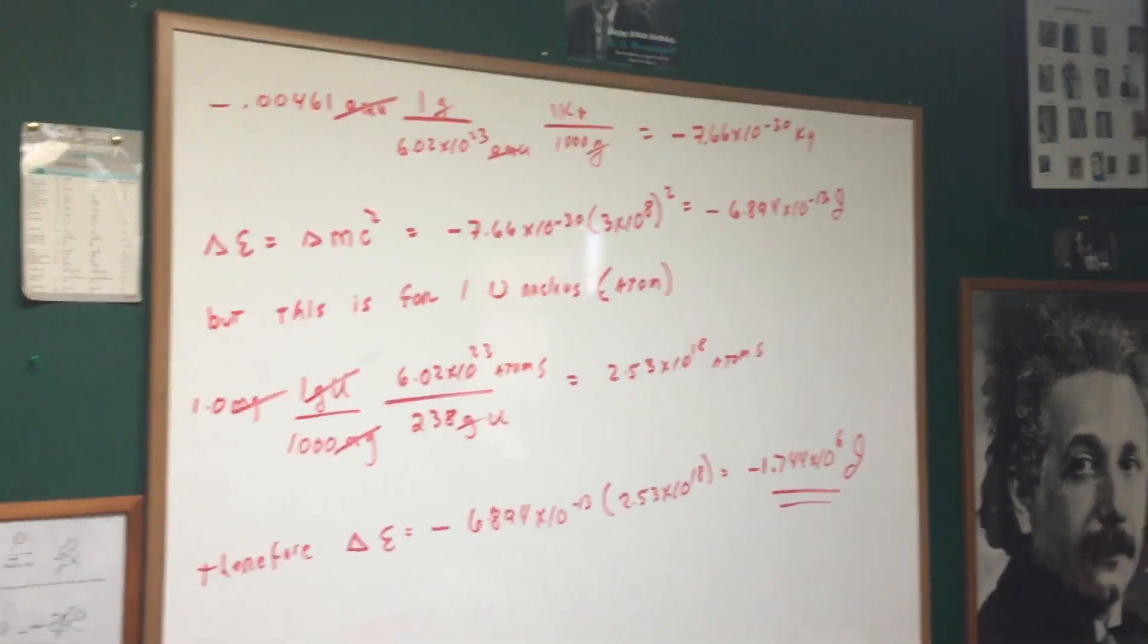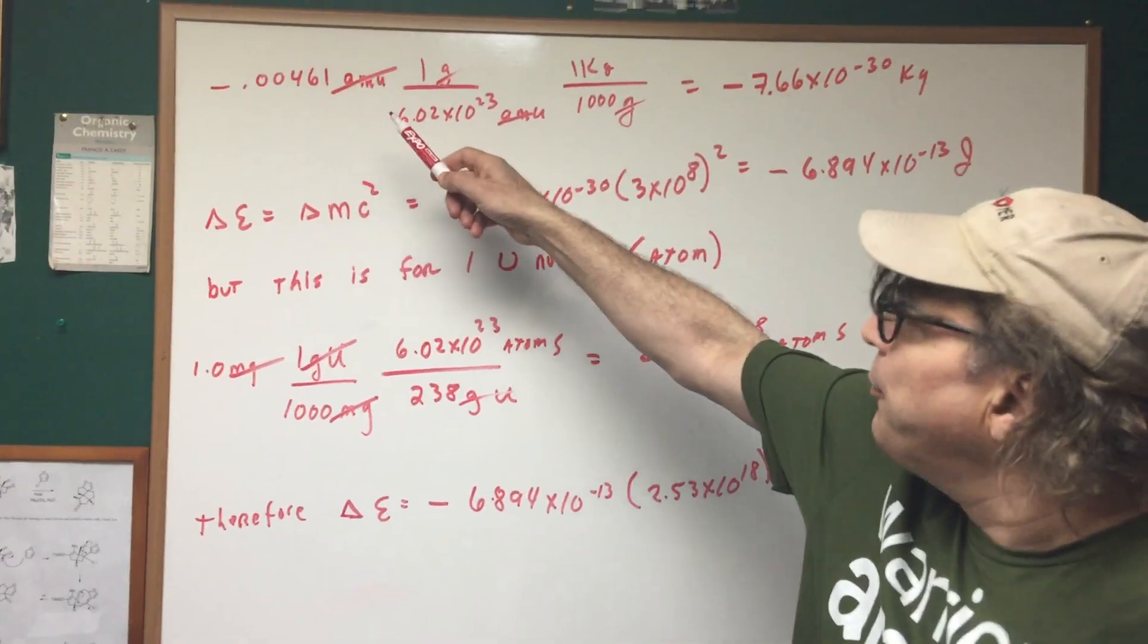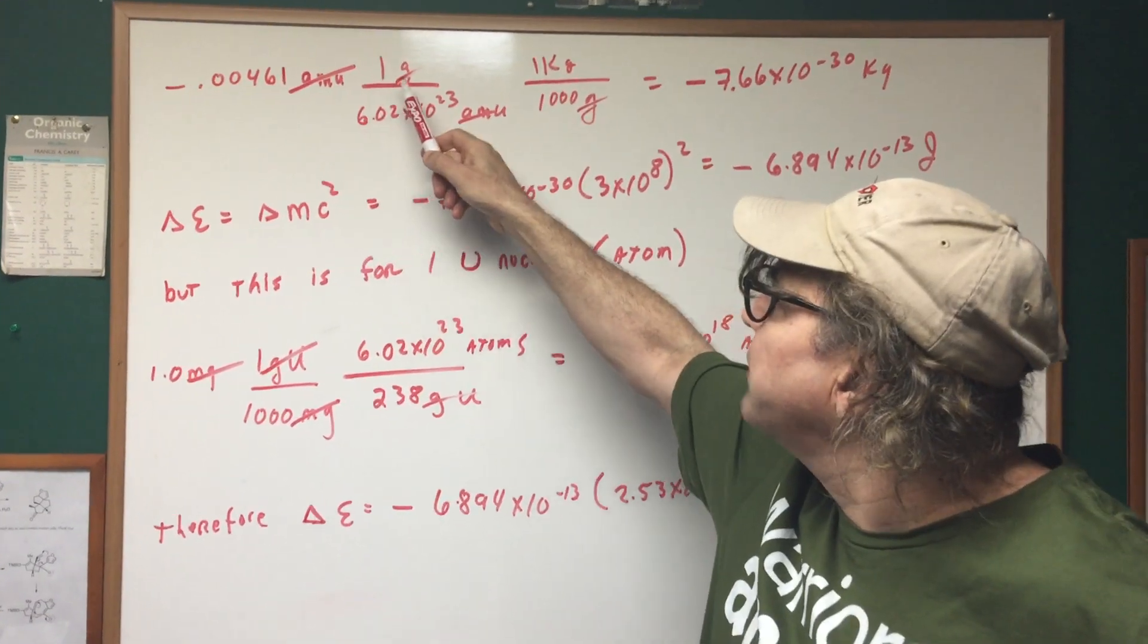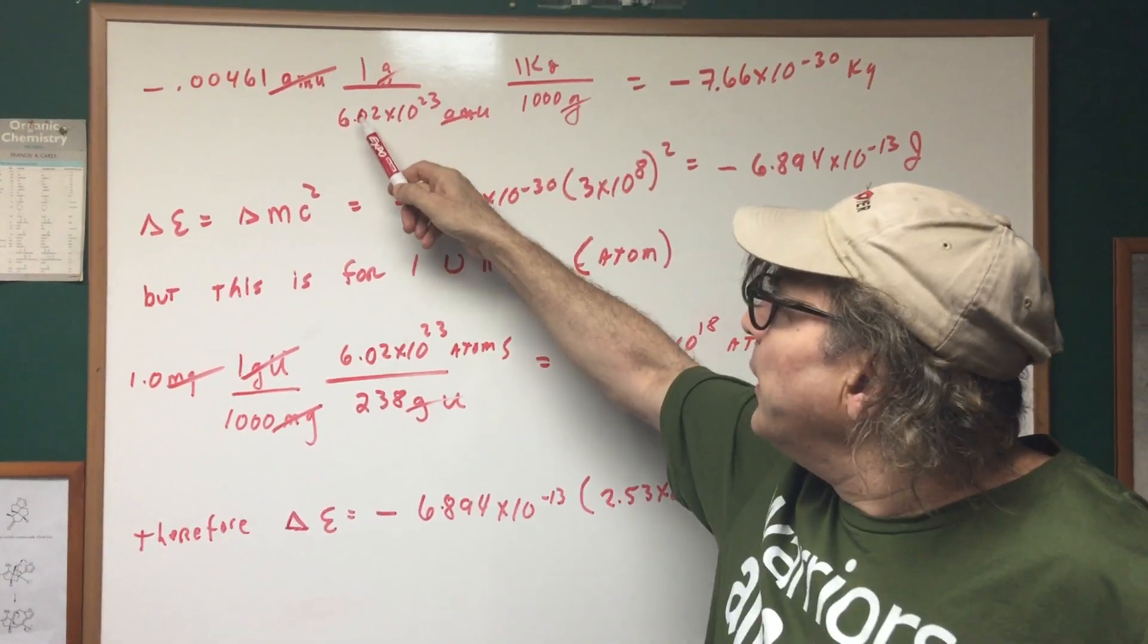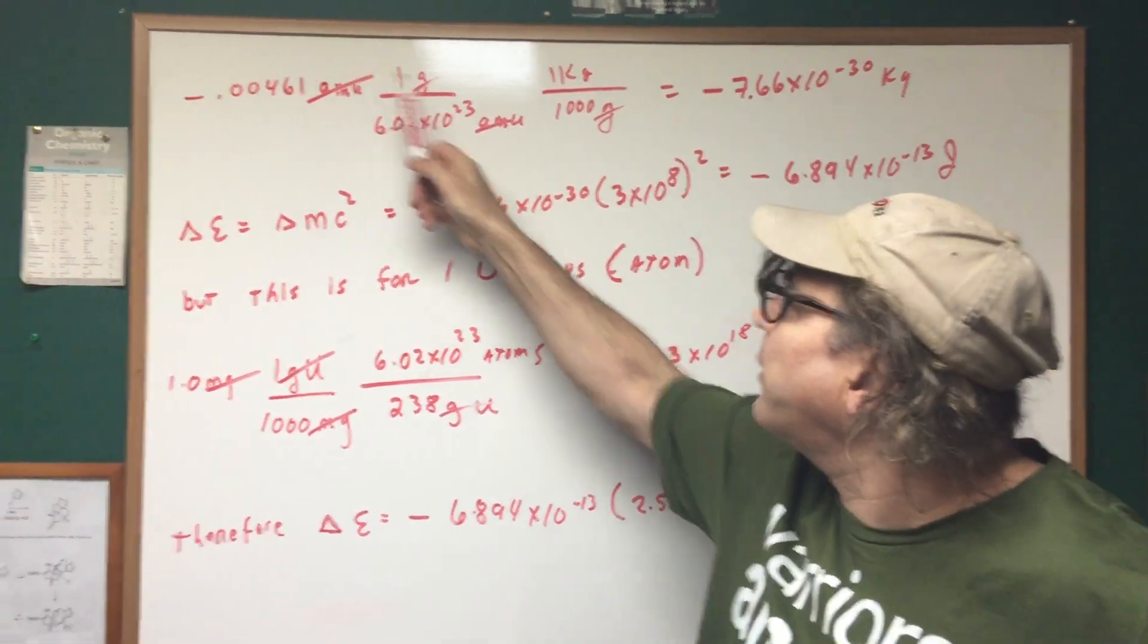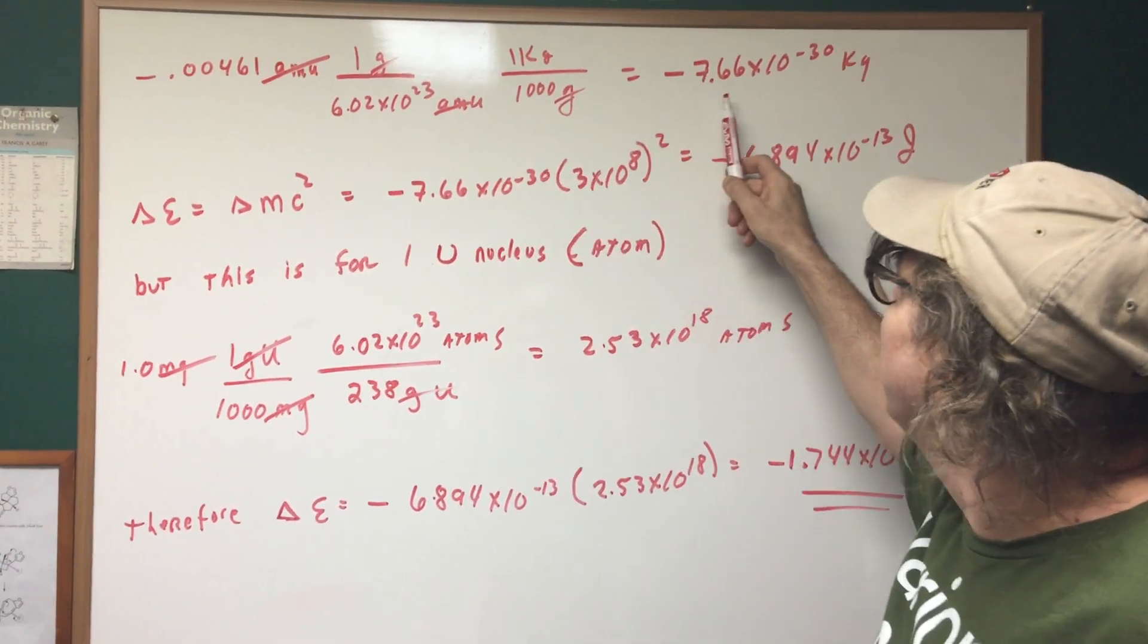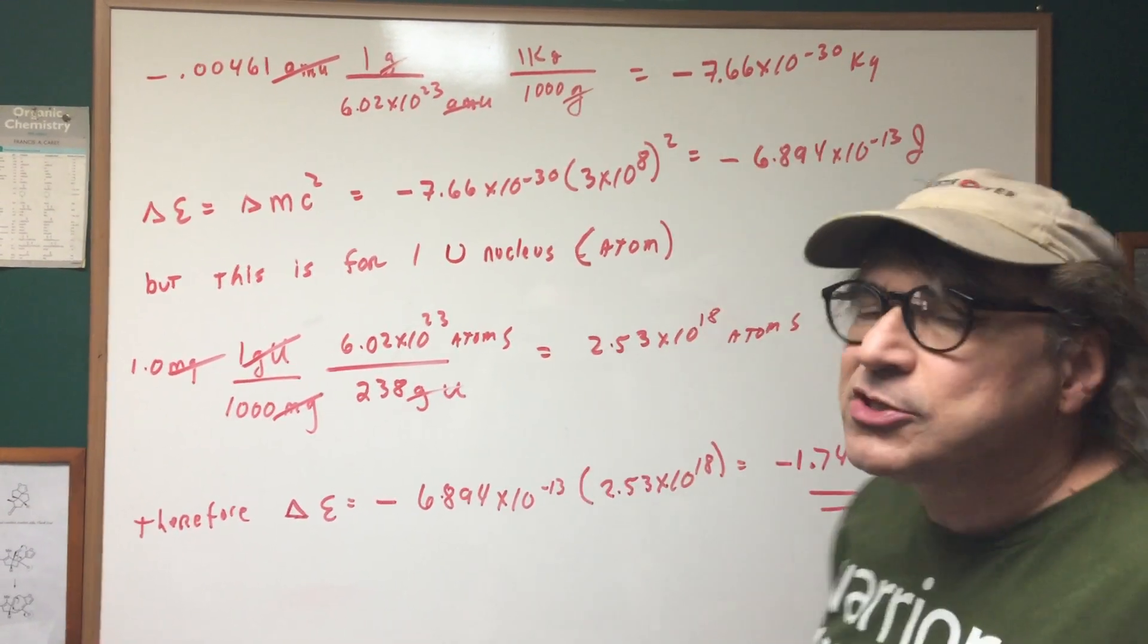What I did was I take, I've taken the mass defect, which is minus 00461 AMUs. And I use this conversion. One gram is 6.02 to the 23rd AMUs. So that's the gimmick. You needed to know that conversion. And then one kilogram is a thousand grams. And that gave me minus 7.66 to the minus 30 kilograms.